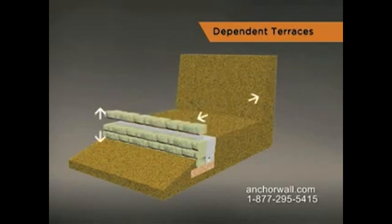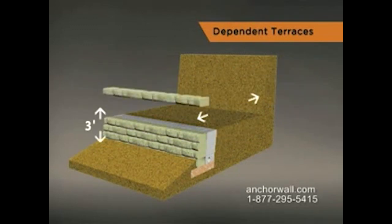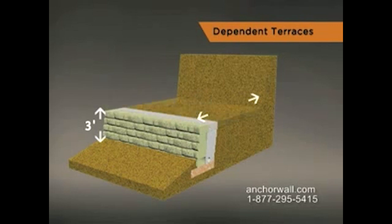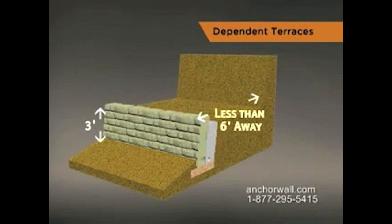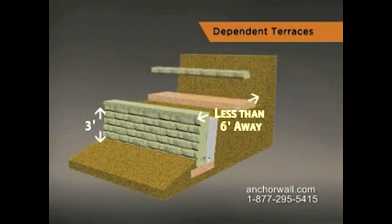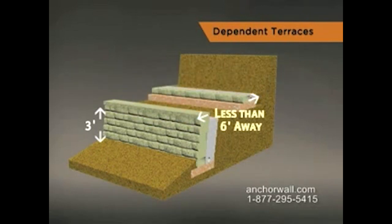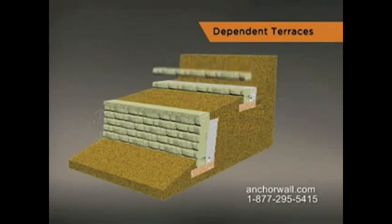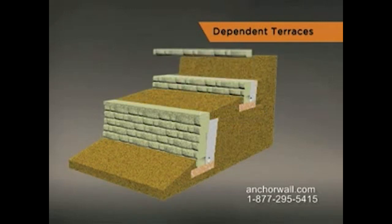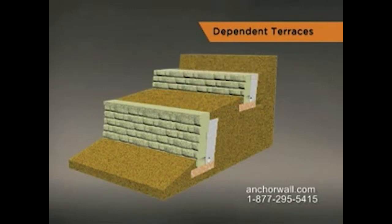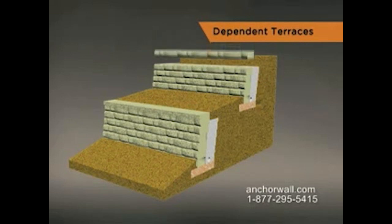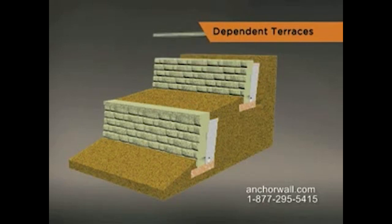For example, if the height of the lower wall is three feet and the upper wall will be less than six feet away, your terraced walls are structurally dependent on each other. If this is the situation, consult a professional engineer who will take global stability into account when designing structurally dependent walls.